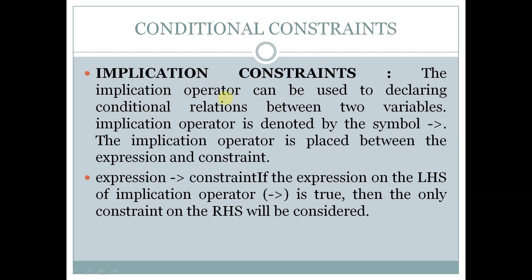Implication constraints. The implication operator can be used to declare conditional relations between two variables. This symbol is the implication operator, and it is placed between the expression and the constraint. With the help of the implication operator, we can declare any conditions like if-else.